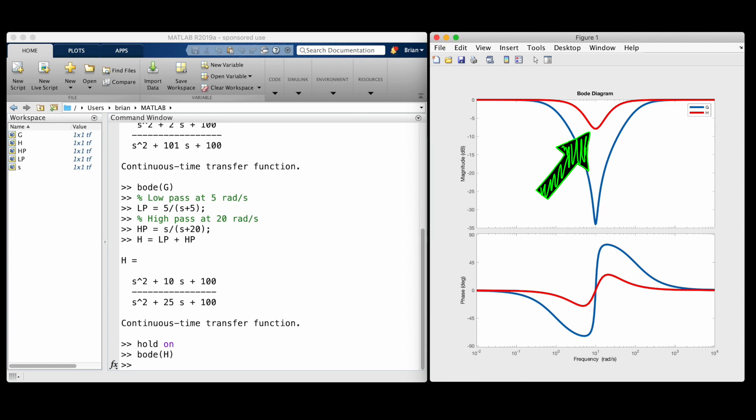The stop band is still centered at 10 radians per second, but you can see that the attenuation has dropped to only about 8 decibels. And you could probably imagine that the attenuation will drop to almost nothing if we wanted a filter that targets a band of 1 or 2 radians per second using this method.